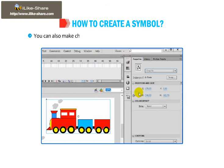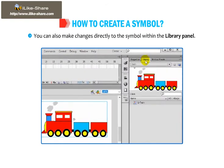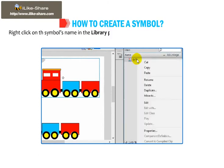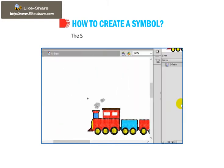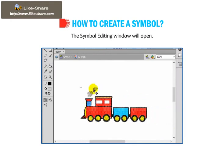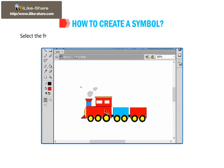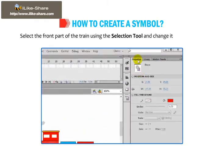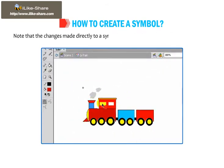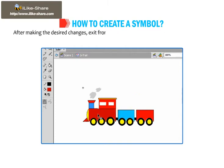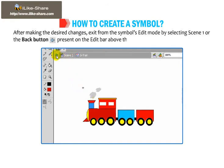You can also make changes directly to the symbol within the library panel. Right-click on the symbol's name in the library panel and select the Edit option from the context menu, or double-click the symbol's icon in the library panel or on the stage. The symbol editing window will open. Select the front part of the train using the Selection tool and change its color to red. Note that changes made directly to a symbol are applied to all instances of that symbol. After making the desired changes, exit from the symbol's Edit mode by selecting Scene 1 or the back button present on the Edit bar above the stage.